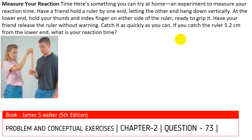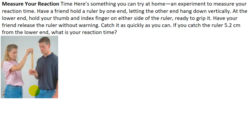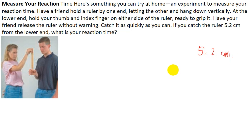Here is a nice experiment to measure your reaction time. A friend holds a ruler by one end letting the other hang vertically downward. You hold your thumb and index finger on either side of the lower end ready to grip it. When your friend releases it without warning you catch it as fast as possible. Suppose you catch the ruler 5.2 centimeters from the lower end.